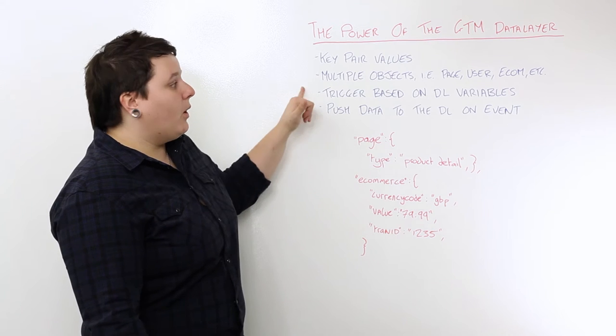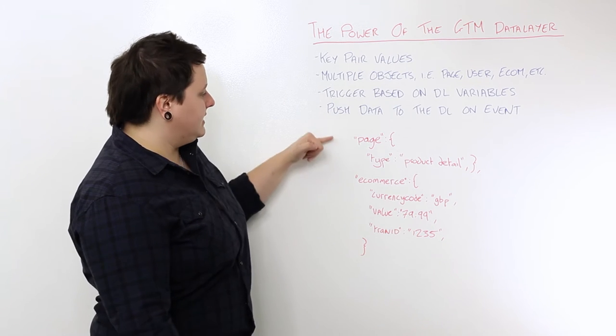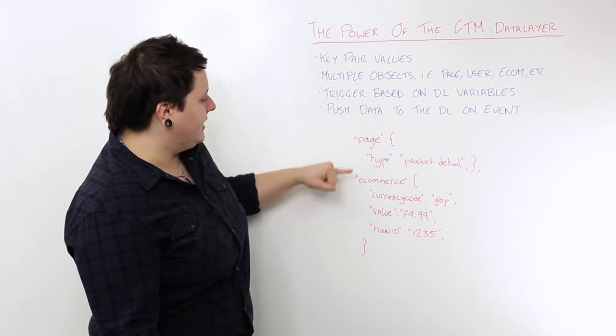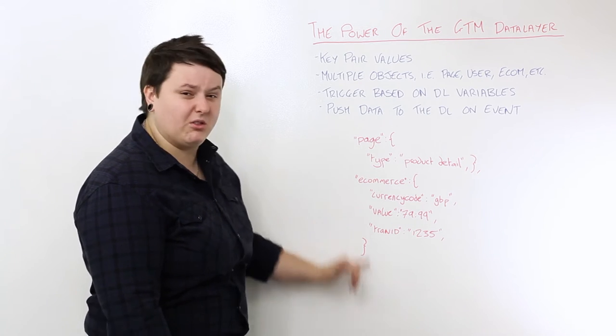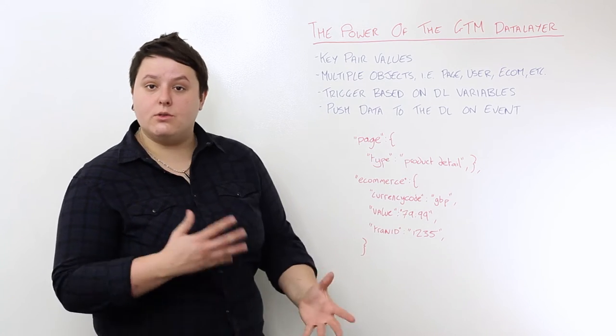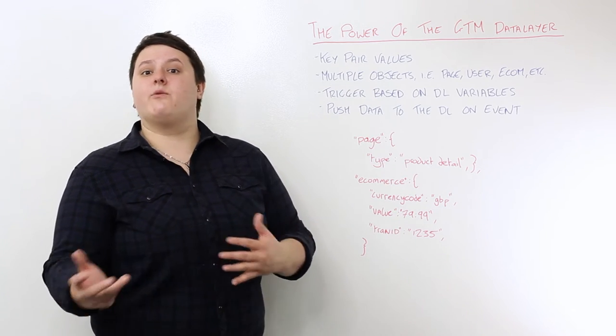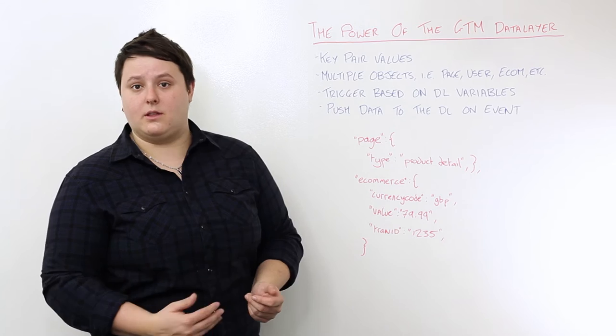And you can have multiple objects in your data layer. So in this example, I've got a page object and an e-commerce object, and within that I've got different values being sent through. You can have lots more objects than that, such as a user object that perhaps contained information specific to the user that's logged into your site.